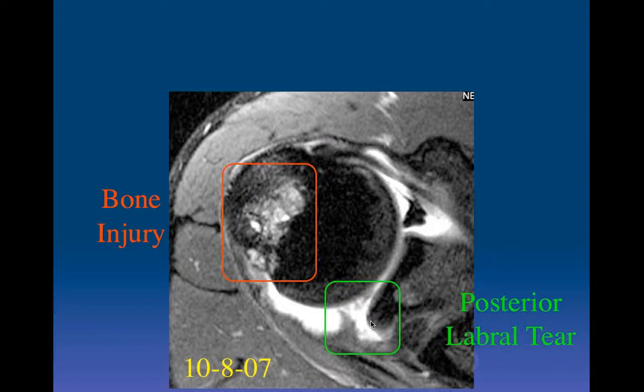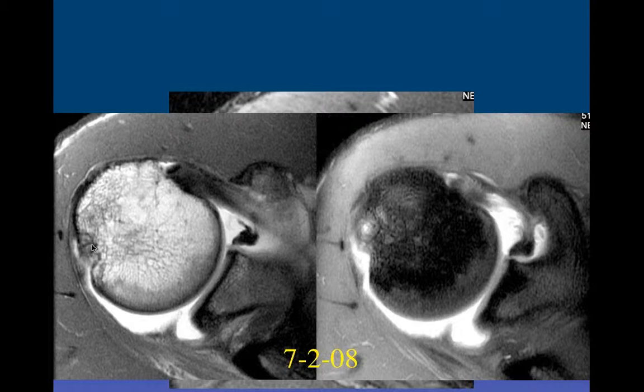The vast majority of massive posterior labral tears in my patient population are due to weight lifting. In Major League baseball pitchers, they need to develop the latissimus dorsi and pectoralis major to throw the fastball, so they do a lot of weight lifting. If done improperly, this leads to a large posterior labral tear.